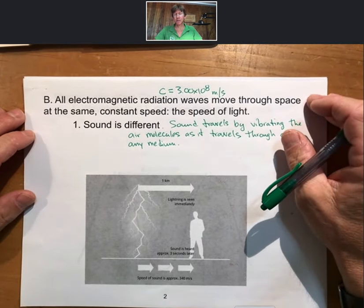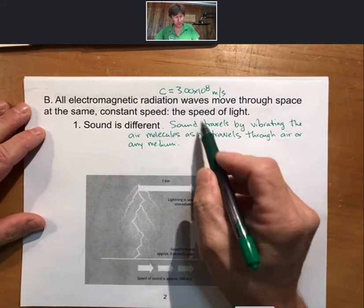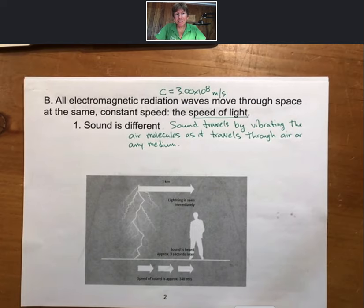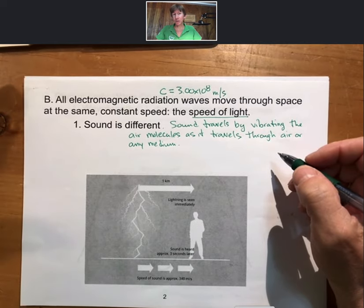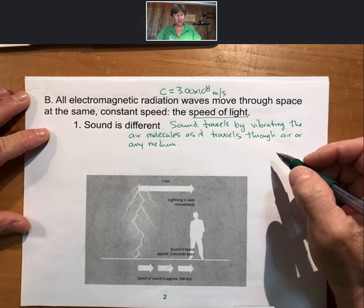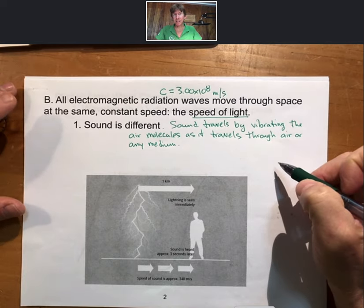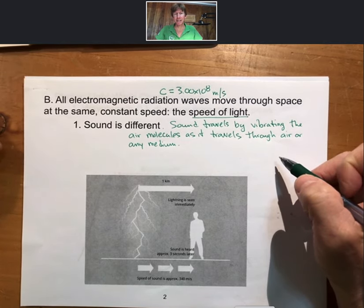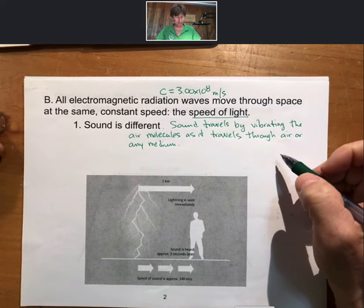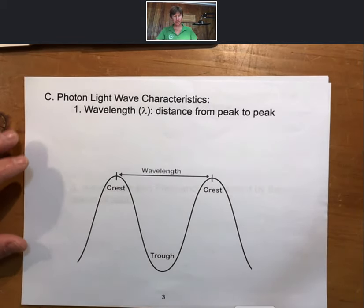And this is all electromagnetic radiation waves, or photons, comprised of photons, move through space at the same constant speed, the speed of light. That speed of light is represented by the symbol c, lowercase c, which, and the number is 3.00 times 10 to the 8th meters per second. And we want to just take a second here to differentiate light and other electromagnetic radiation from sound. Sound is different because sound travels by vibrating the air molecules as it travels through air or any medium. Light needs no medium. There needs to be no particles. Another thing we will know about light is that a photon and all light has no mass. And the speed of sound is approximately 340 meters per second, much slower.